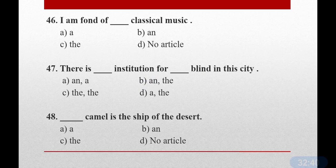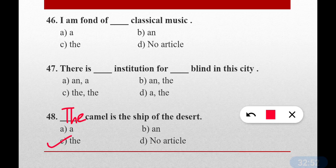Question number forty-eight: Dash camel is the ship of the desert. We are talking about a particular well-known animal — the camel — in general, so we use 'the'. The camel is the ship of the desert. Option C is correct.